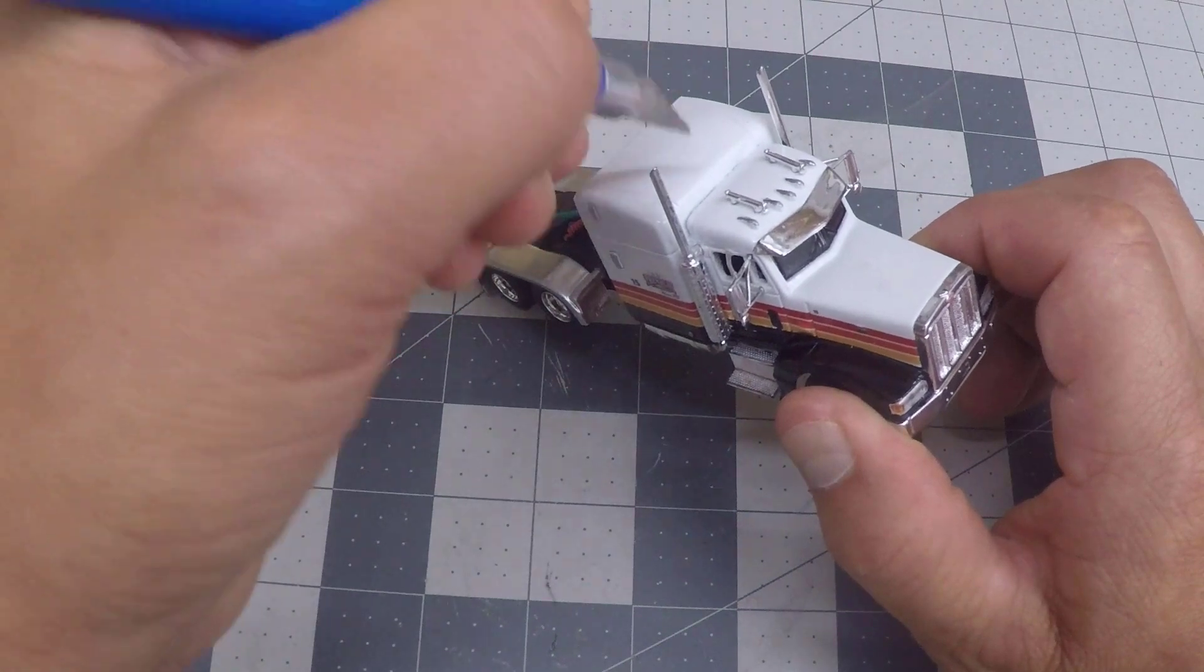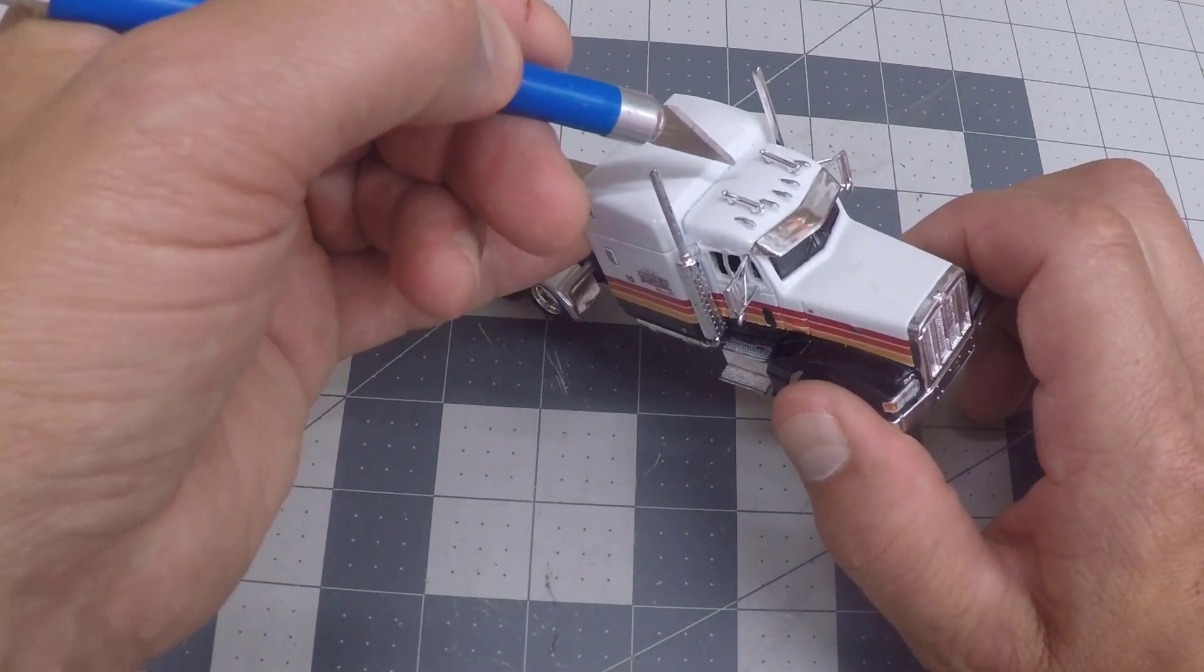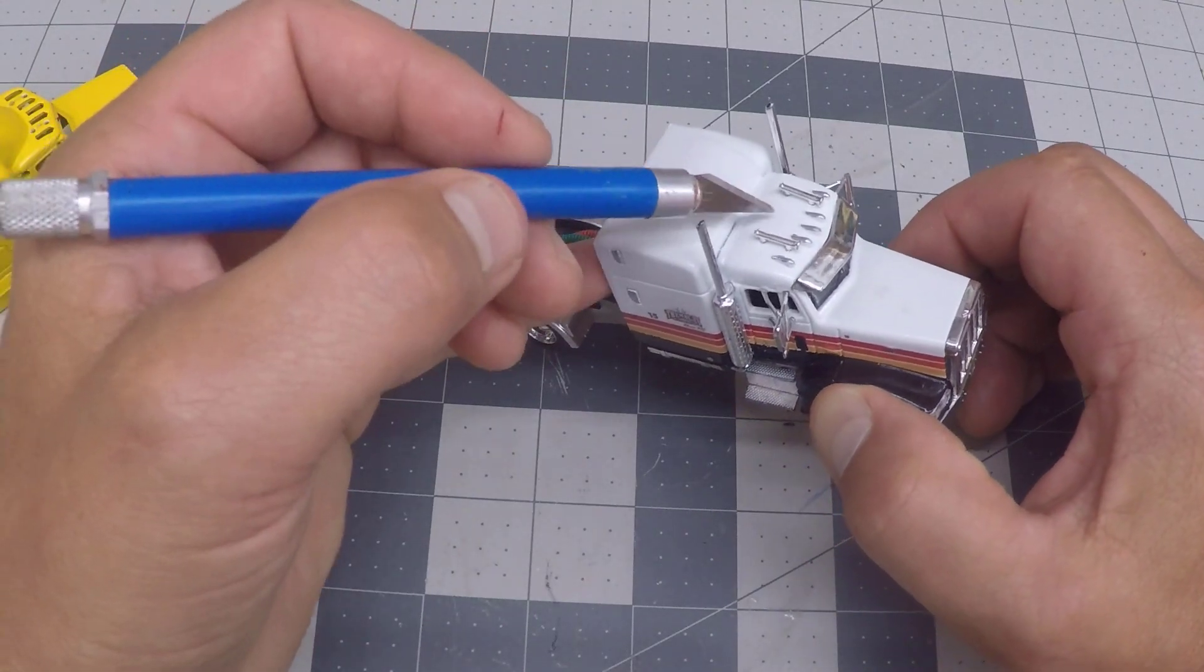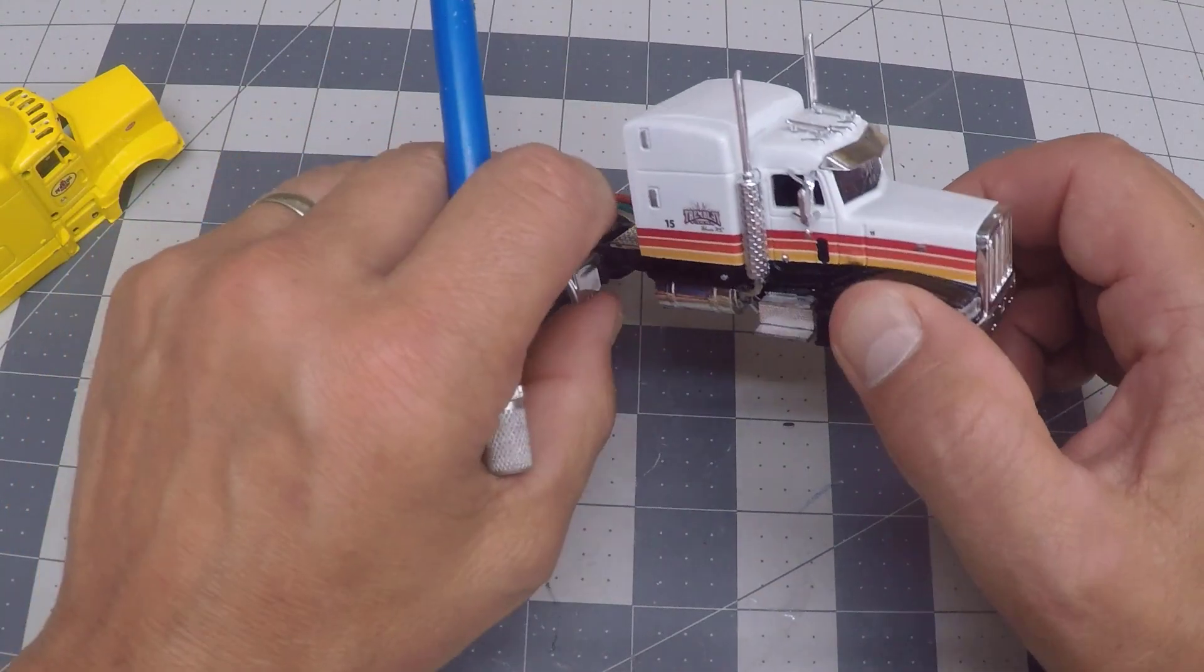So that had to be done first. And then I started fitting the roof cap on. That was accomplished just by dry fitting it, taking it off, and just solving the puzzle until it looked the way I wanted it to.